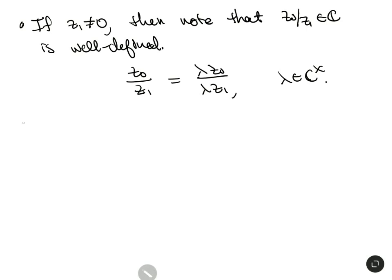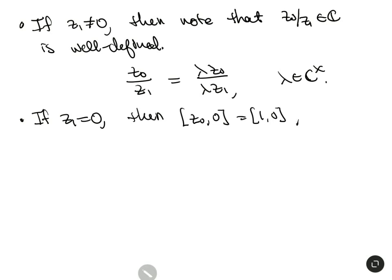If z₁ = 0, then there's really only one point: [z₀ : 0] = [1 : 0], because we can't have both equal to zero (we removed that point). This is a single point, and we identify this point with the point at infinity.